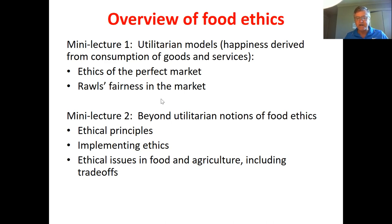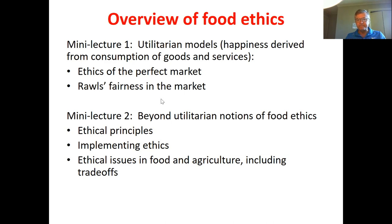The utilitarian model doesn't say anything about how much different people have. Saying one person can't benefit without another losing tells us nothing about the allocation of happiness. John Rawls added a different notion of ethics about fairness: even in a world where we think only about happiness from consuming, we should think not just about the totality of happiness but its allocation. In his theory of justice, focused on fairness within a utilitarian concept, he came up with the veil of ignorance as a thought experiment to think about what might be considered fair.